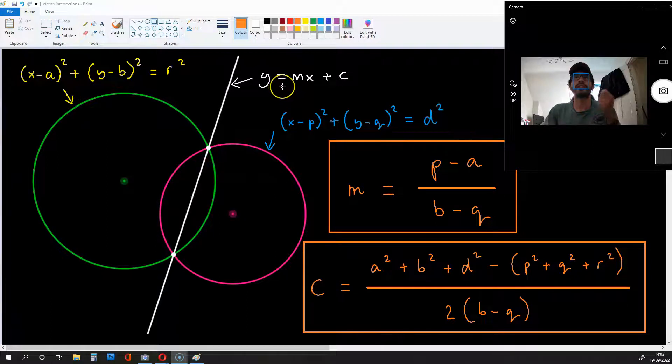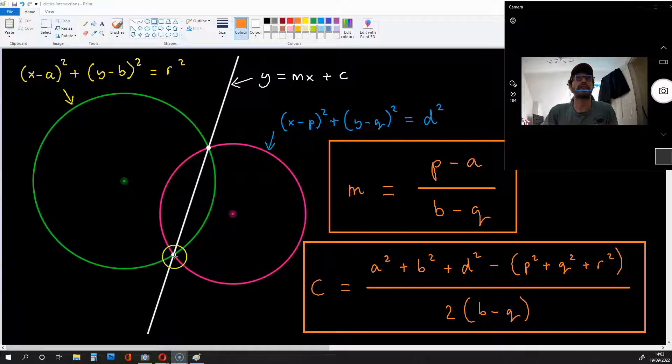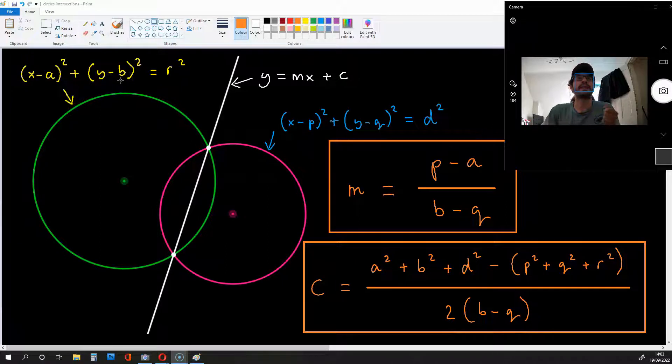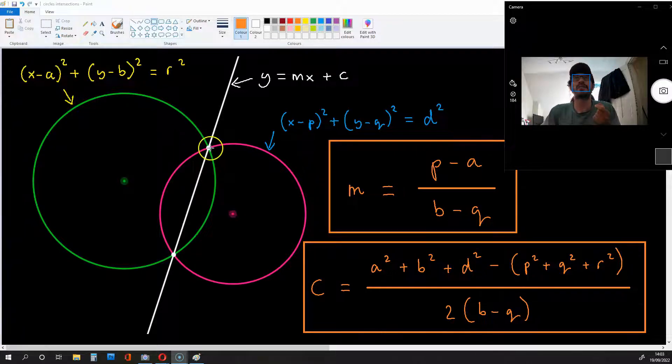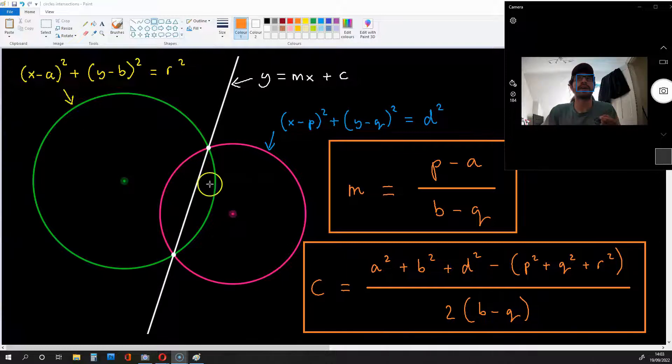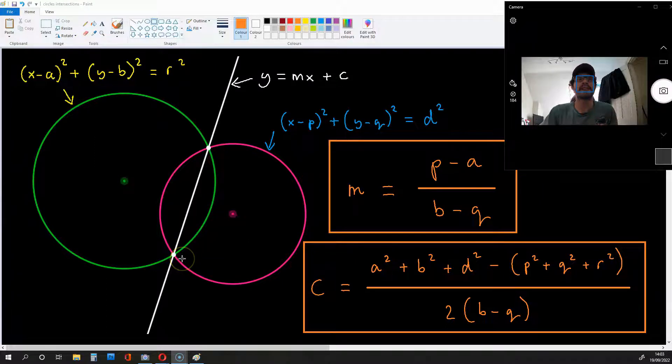Okay, so we know what this line is and we know where it cuts the green circle. So, if we plug this value of y into this equation over here to the left, what we can get is a quadratic equation which gives us the x coordinates of these intersections right over here. Once we have these x coordinates, we can find the y coordinates, and we have the complete coordinates of these two intersections over here.